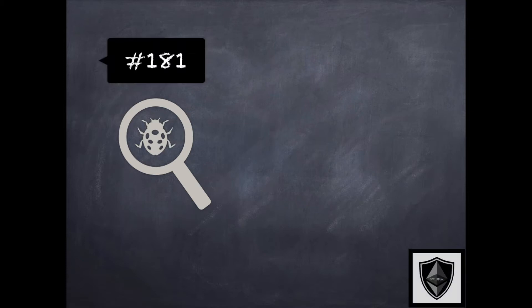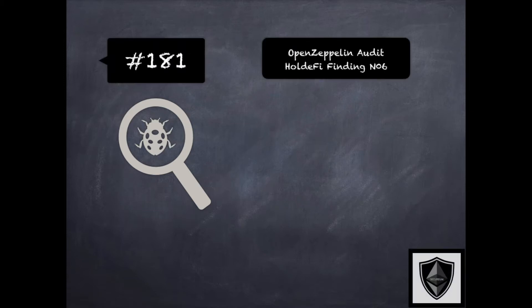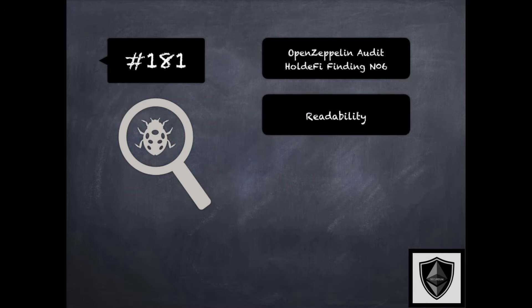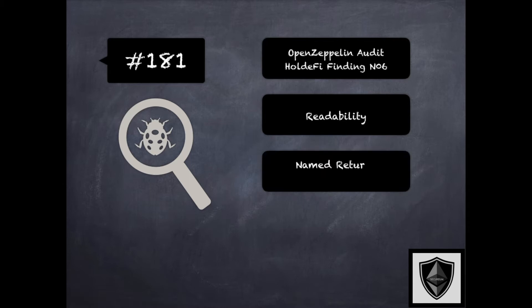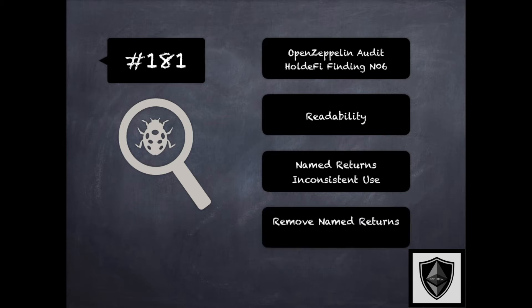Finding 181 is from OpenZeppelin's audit of Holdify, where the concern was that there was an inconsistent use of named return variables across the code base that affected explicitness and readability. The recommendation was to consider removing all named return variables, explicitly declaring them as local variables in the function body, and adding the necessary explicit return statements where appropriate.